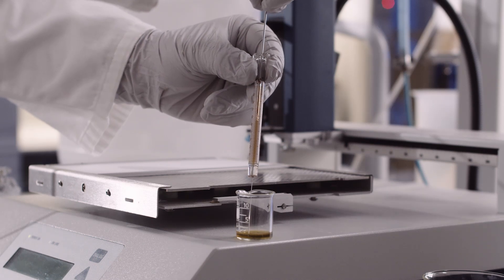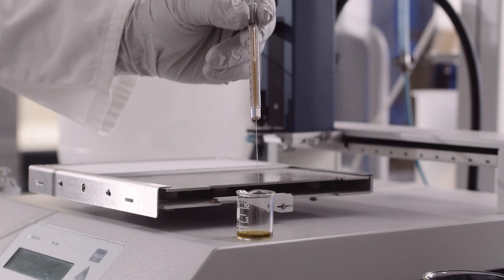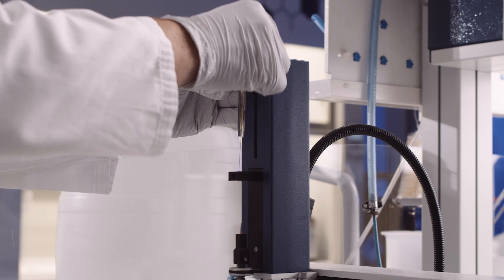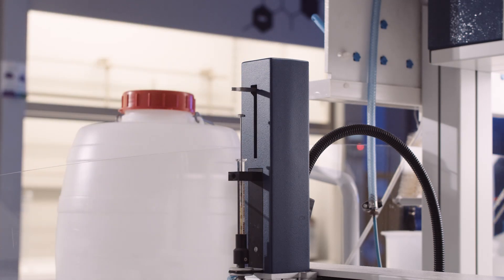TLC is a simple chromatographic technique used to identify compounds, check their purity, or monitor the course of chemical reactions in synthesis. It is significantly faster than column chromatography, but much less sample is needed.